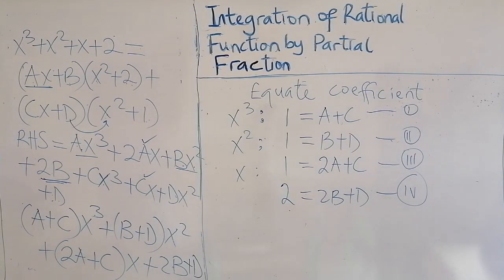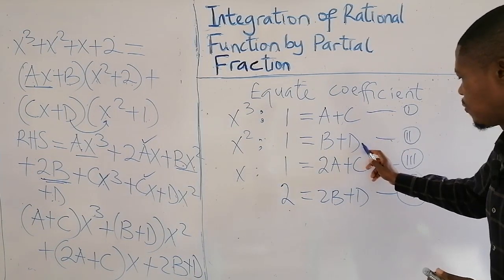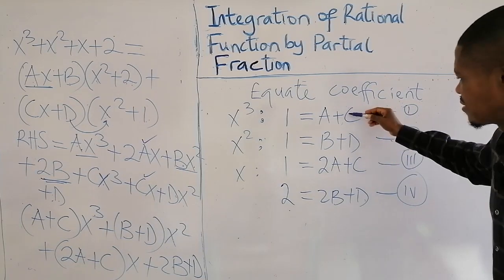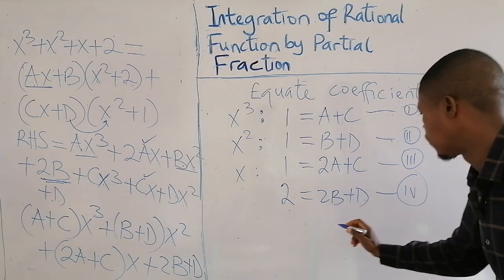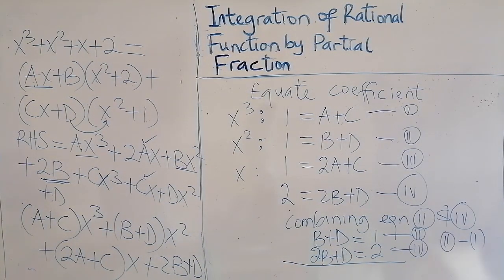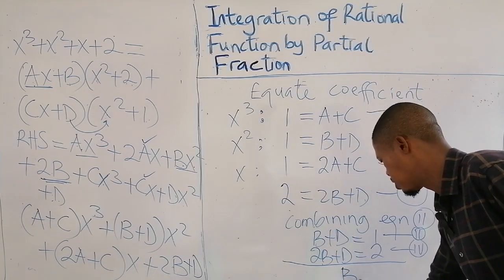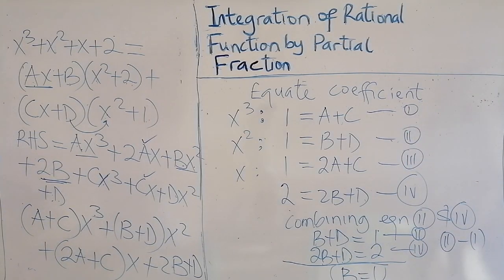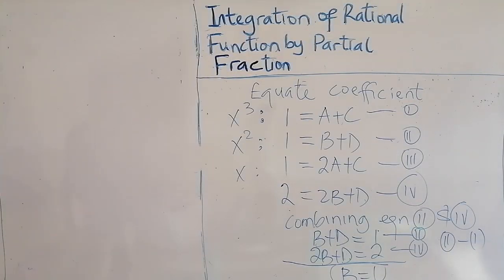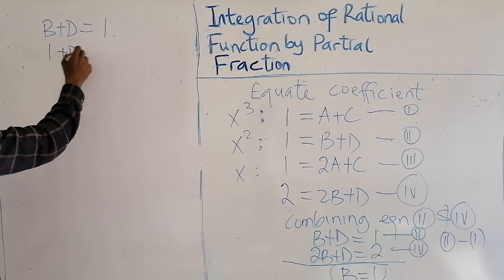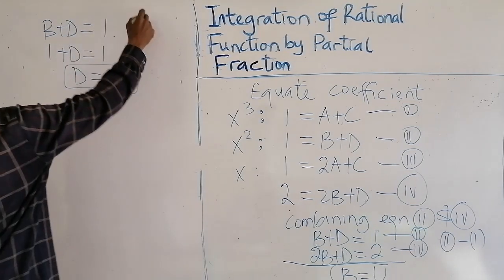These are the four equations generated. We look at the constants that are the same: equations 2 and 4 both contain b and d, so we combine them. Subtracting equation 2 from equation 4: 2b minus b gives b, d minus d gives 0, and 2 minus 1 gives 1, so b = 1. Substituting b = 1 into equation 2: 1 + d = 1, so d = 0.